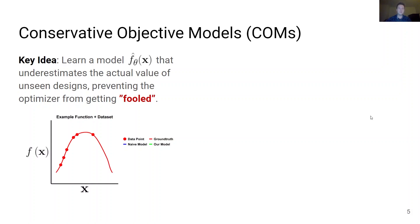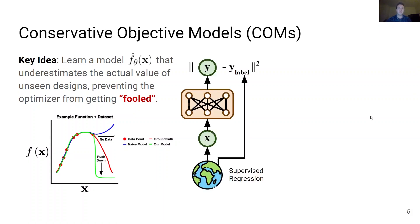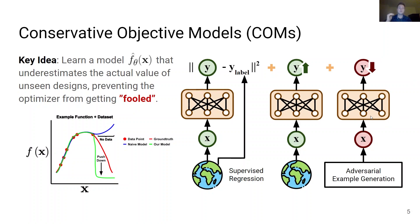Using this idea, when a dataset is missing points in regions of the design space where a naive model may overestimate the value of points in this region, our method pushes down a model's predictions in these regions. This corresponds to supervised regression using an offline model-based optimization dataset while jointly pushing up the objective values for designs that are in the dataset and pushing down the objective values of negatives, including adversarial examples.